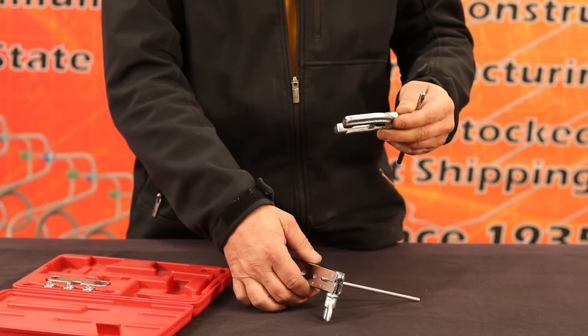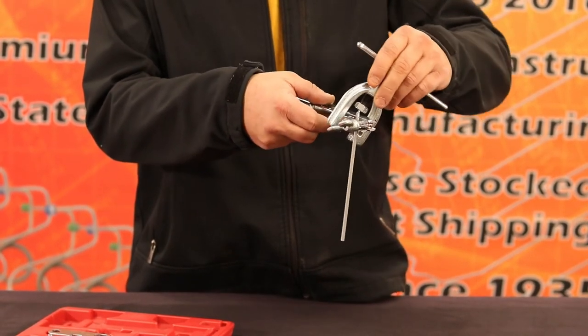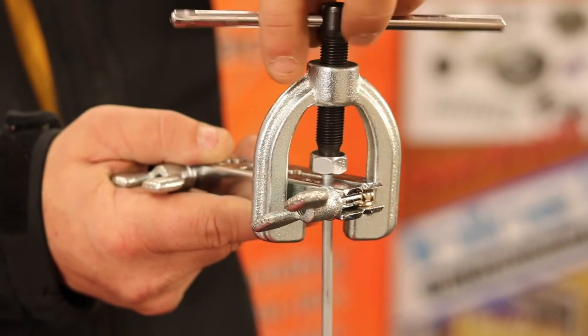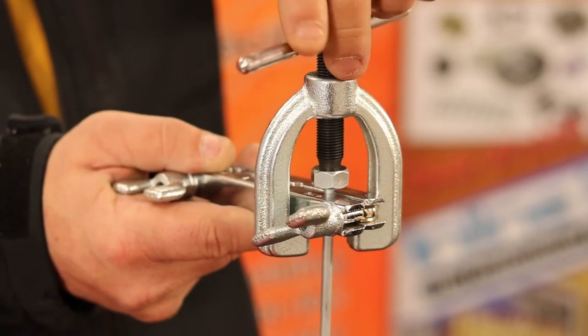Next, slide the pressure die clamp and adapter over the die block containing the tubing. Begin to turn the pressure die clamp clockwise until the adapter almost bottoms up.